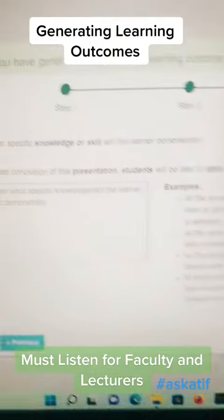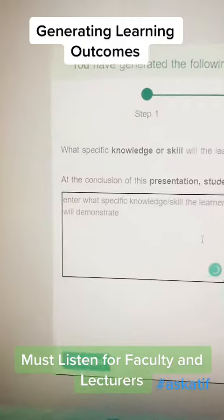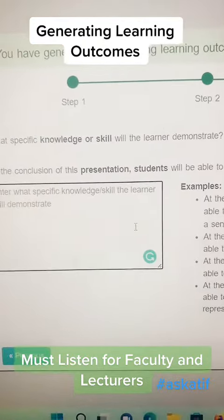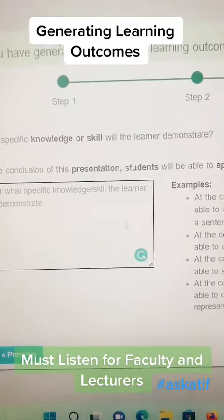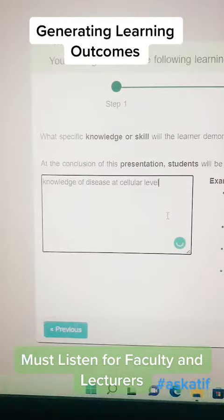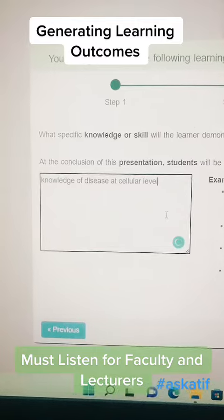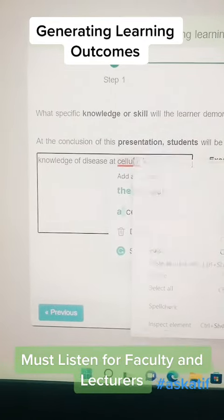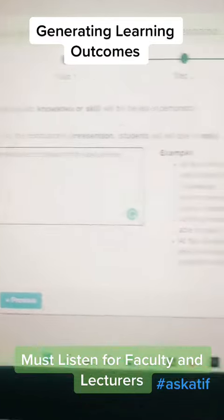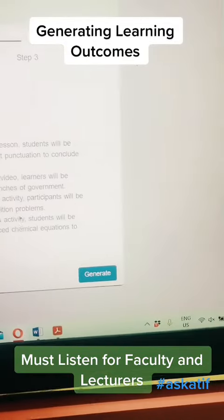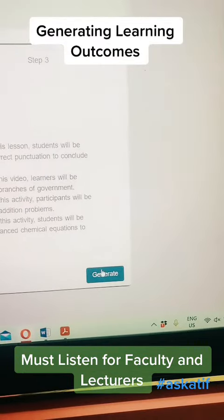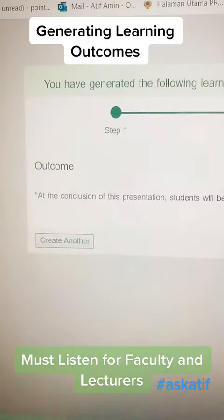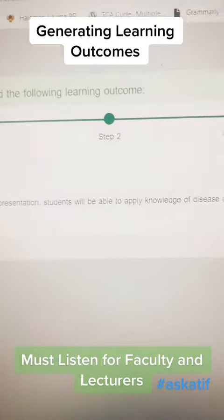Here I am going to write a specific knowledge or skill that will be learned and demonstrated. For example, I am going to write down knowledge of disease at the cellular level. Then I am going to click Generate to see the learning outcome.